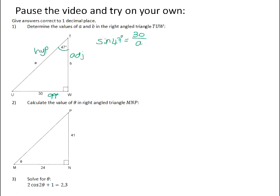We don't know the value of A. Okay, so we need to solve for A. So we start off by multiplying both sides of the equation by A. And then to get A by itself, we need to divide both sides by the sine of 47 degrees.